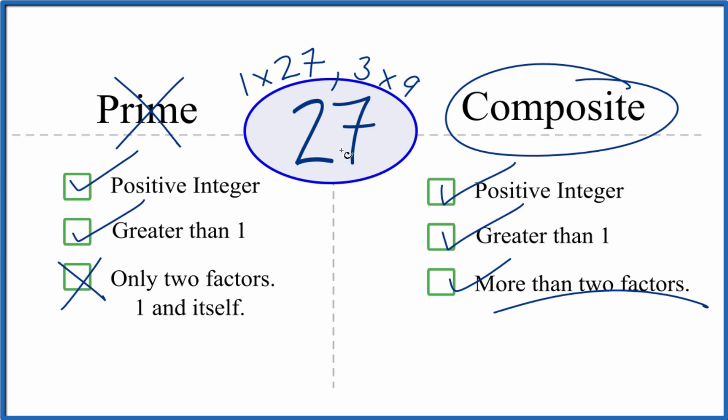This is Dr. B looking at whether 27 is prime or composite. It's composite. Thanks for watching.